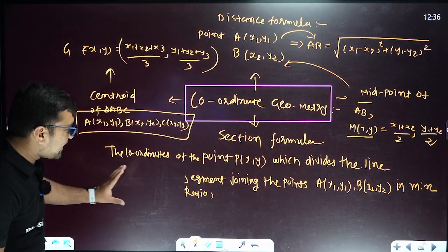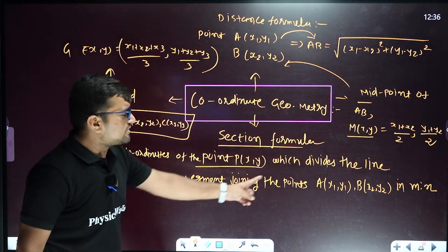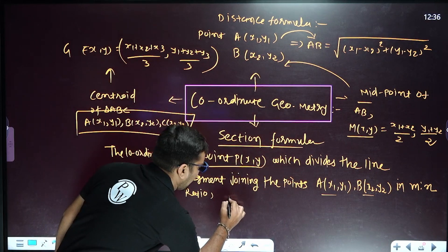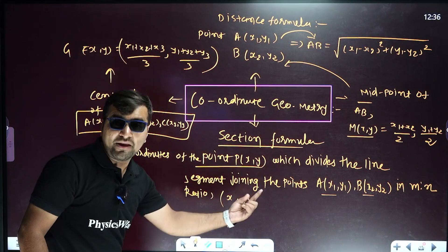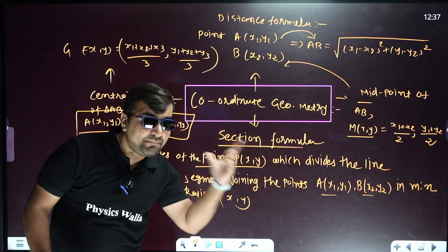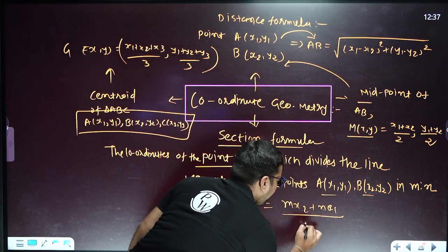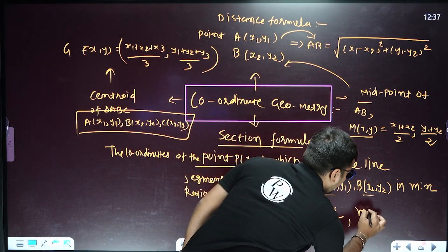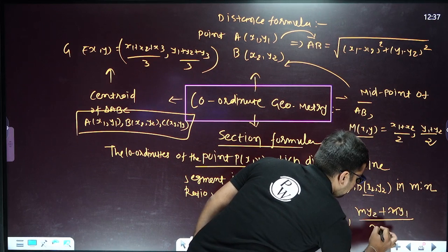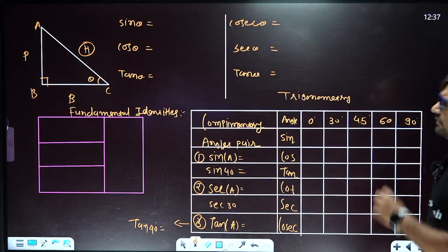The section formula: if a point divides the line segment joining A and B in the ratio m to n, then its x-coordinate (abscissa) is (m·x2 plus n·x1) upon (m plus n), and its y-coordinate (ordinate) is (m·y2 plus n·y1) upon (m plus n). Remember this formula.